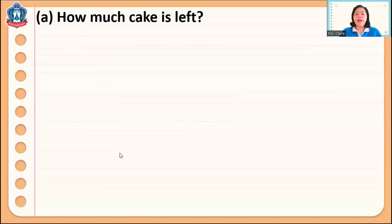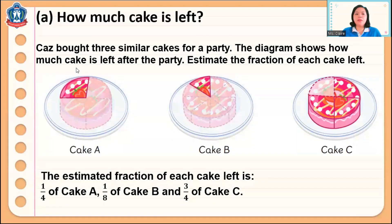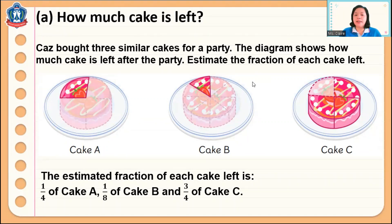I have here a problem: how much cake is left? Because both bought three similar cakes for a party. This diagram shows how much cake is left after the party. Let's estimate the fraction of each cake left. The estimated fraction for cake A is one quarter, for cake B is one eighth, and cake C is three quarters.